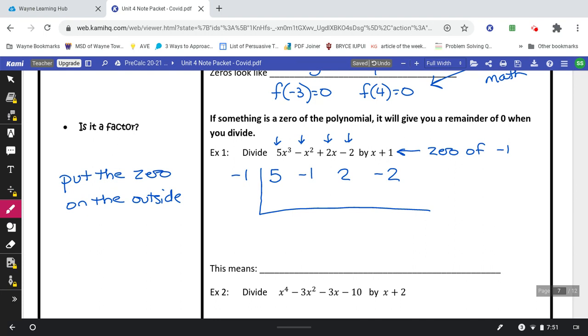This is called synthetic division. The way this works is you are going to drop this 5 down. Whatever number is in the front here drops down. Then you multiply negative 1 times 5 and put your answer right there. Then you add those together to make negative 6. And you repeat that process again. So negative 1 times negative 6 gets you 6. You add 2 plus 6 to get 8. Then you multiply negative 1 times 8 to get negative 8. And you add those to get negative 10.